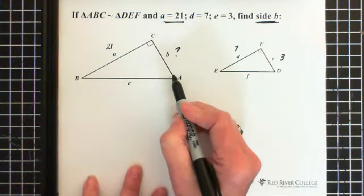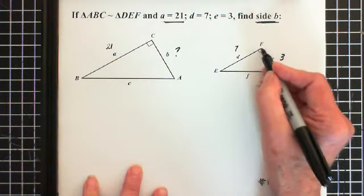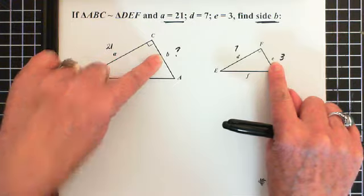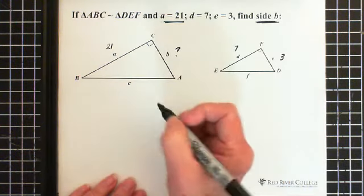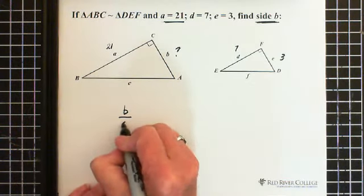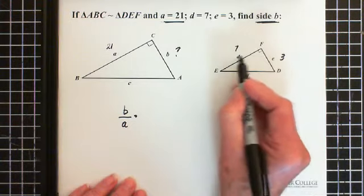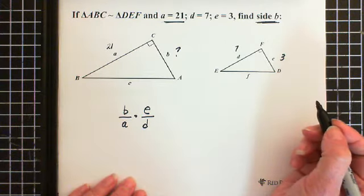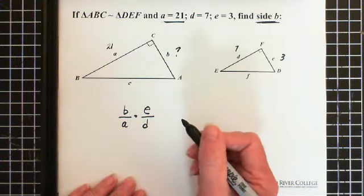So notice that we have side A and side B, and we're looking for side B, I should say, and we have side D and side E. So this corresponds to this, B corresponds to E. So we can then put this together as, let's put B on top, makes it easier to solve. So B with respect to A, so this relationship has to equal the relationship of E with respect to D. They have to be the same. We know E, we know D, and we know A. With that information, we can solve for B.